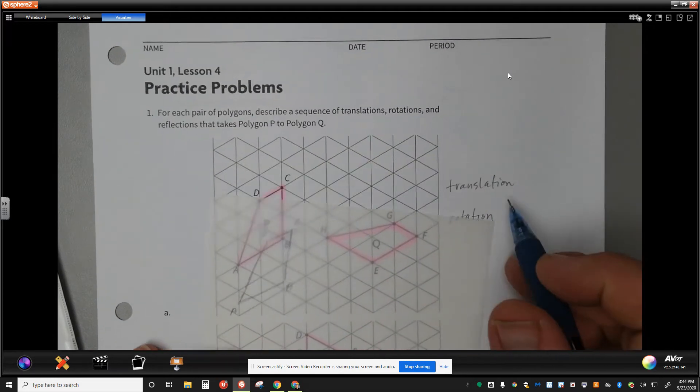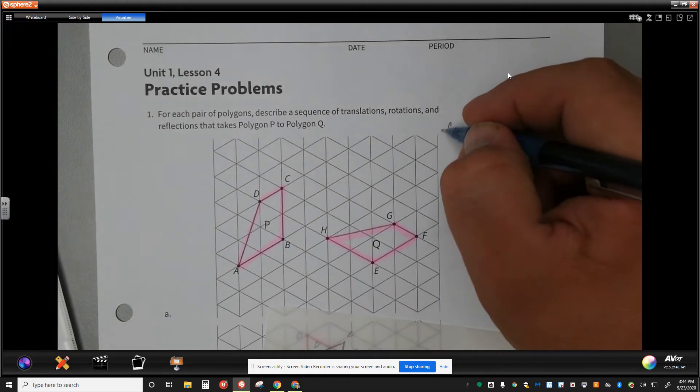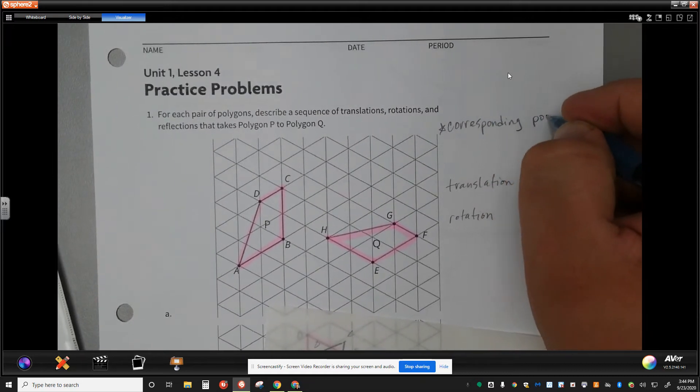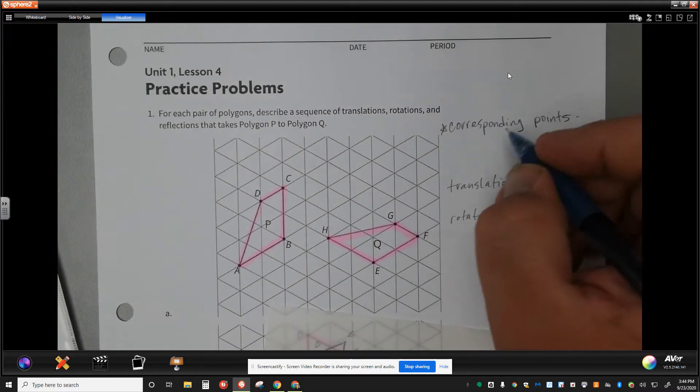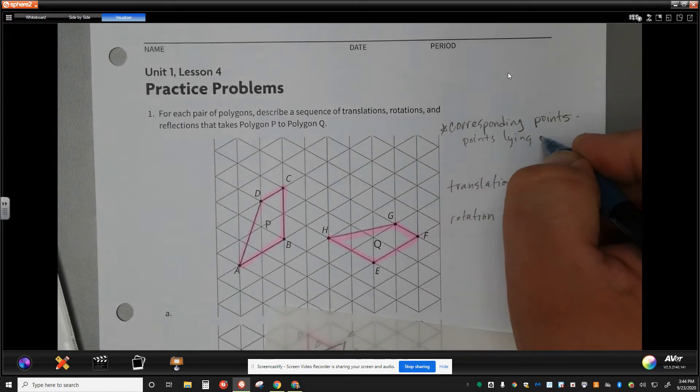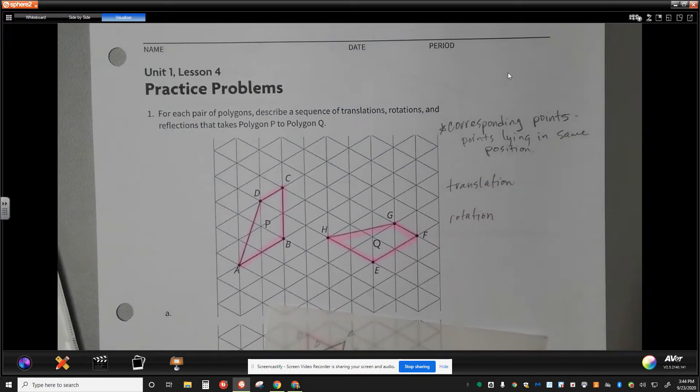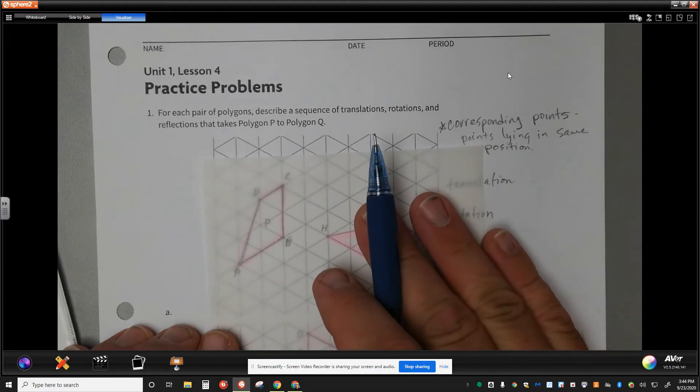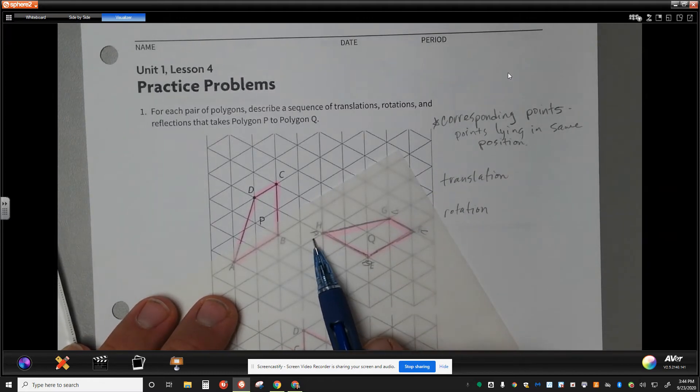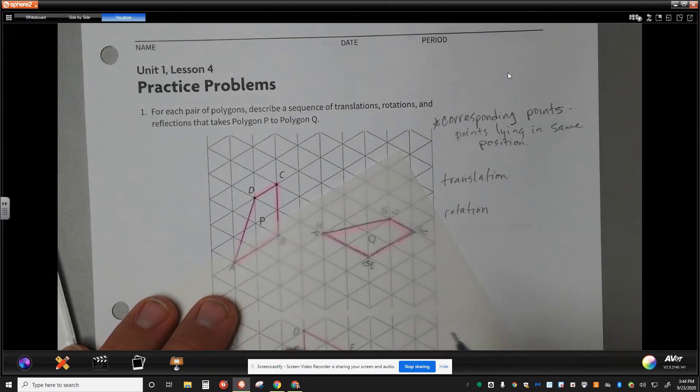For me, I'm looking for, under my translation, I'm looking for corresponding points, meaning points that are in the same position. Don't forget about that piece. Corresponding points. So points lying in the same position or spot on the figure. When I look at this, I look at this point A, and then when I go and line this up, I can see all of the different points that are corresponding. H and A are corresponding. D and G. C and F. B and E. Those are all corresponding locations.